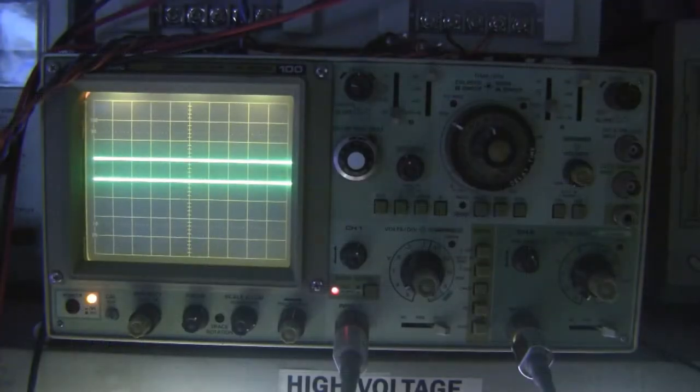Channel one of the oscilloscope is connected to the blanking signal coming from the sync generator board. This signal is 30 volts peak, DC coupled. The upper trace at the moment is set to zero volts.